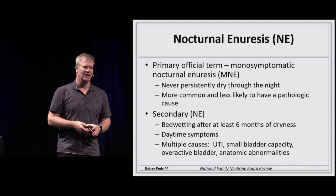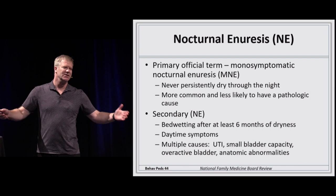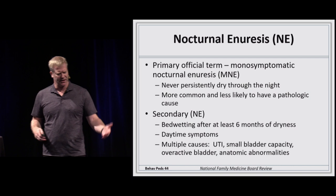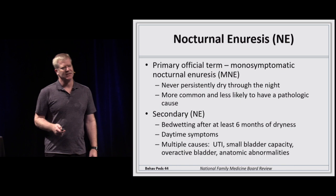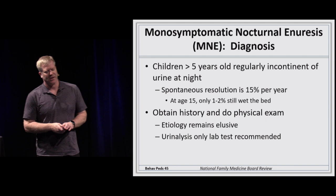History and physical exam are the main diagnostic tools. Urinalysis is indicated only if a UTI is suspected. Behavioral interventions have limited effect. Fluid restriction at night is not recommended — the child should drink if thirsty. Age-appropriate cleanup expectations are important — don't be angry at a five-year-old for a natural condition.